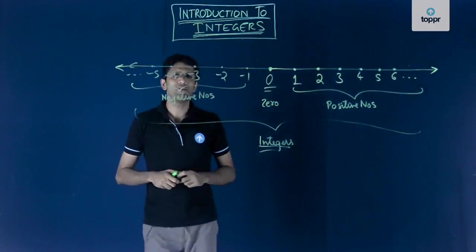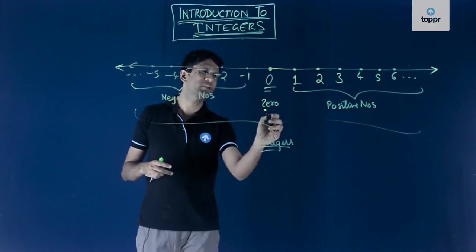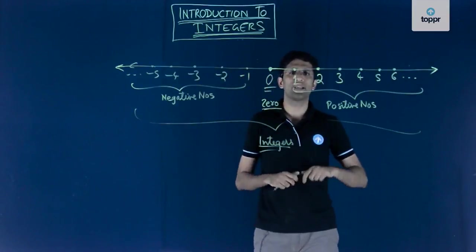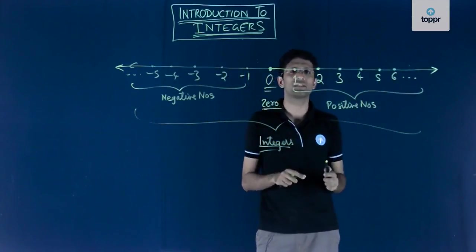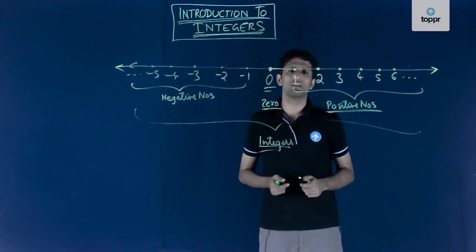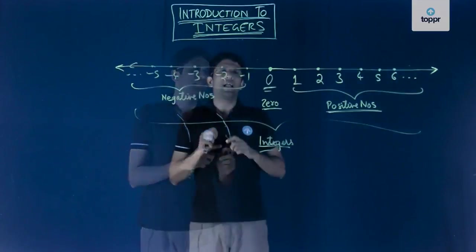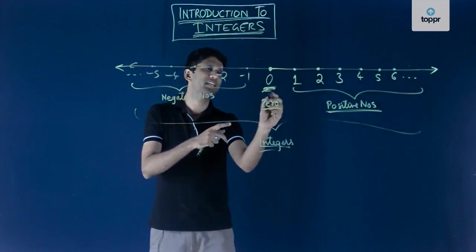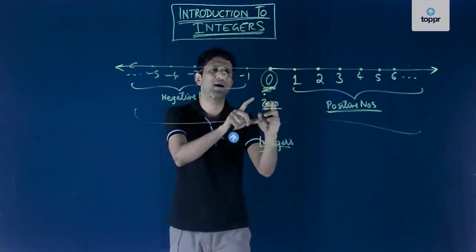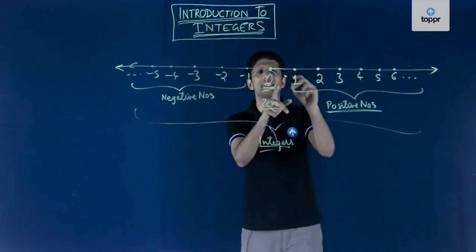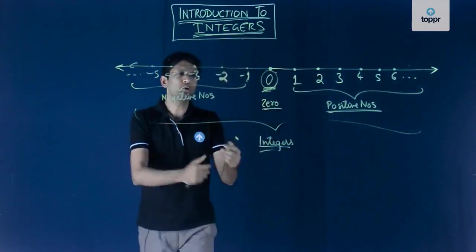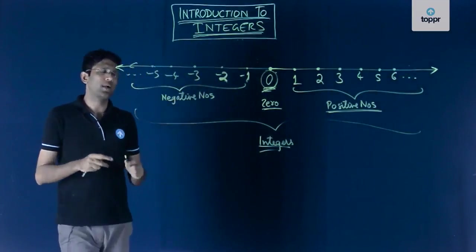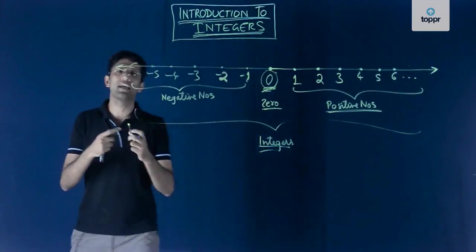We have seen what negative numbers, positive numbers, and 0 are. Positive numbers were the first to be invented because we wanted to count things — one thing, two things, three things — represented by positive numbers. If there is an absence of anything, that level of nothingness is represented by the symbol 0, so if there are no things we say there are 0 things. To understand the origin of negative numbers, let us look at a small real-life example.